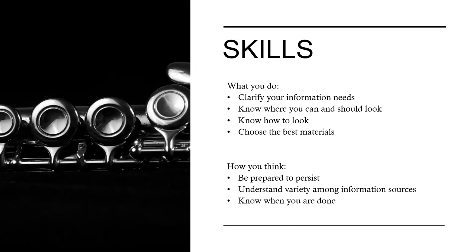As with the other frames in the ACRL framework, Searching as Strategic Exploration covers both the skills and the attitudes you need to successfully complete research — both what we need to be able to do and how we need to think about it. The first skill is to identify what information we need. What do we need to come away with at the end of our exploration? That depends on factors including: what questions are we trying to answer, how much information do we need, how broad or deep does it have to be, whose voices or expertise do we need, who is our audience, and what type or format of information do we need and why?